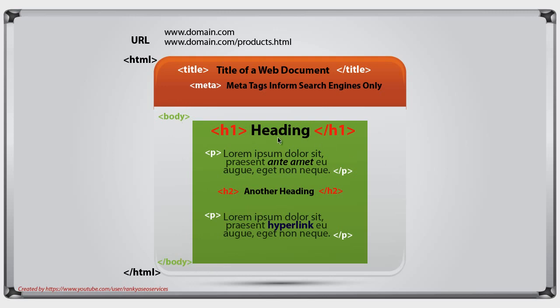You have headings and some text which are within the paragraphs, then you've got heading 2's and you also have hyperlinks and so on. This is how Google determines what your landing pages are all about.